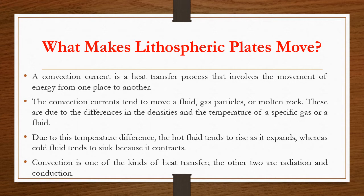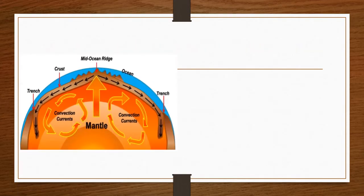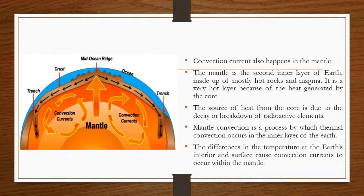So what happens with the plates is that when the hot fluid goes up and the cold fluid sinks, it creates movement. Here is an image of what happens during convection currents. Convection current also happens in the mantle. As you can see, the hot fluid goes up and the cold fluid goes down, forming a cycle. This process repeats continuously.